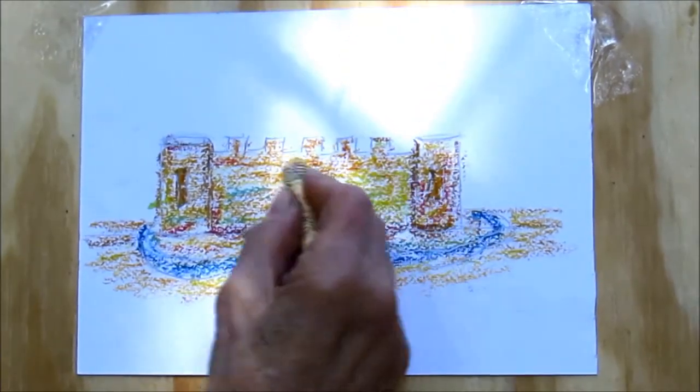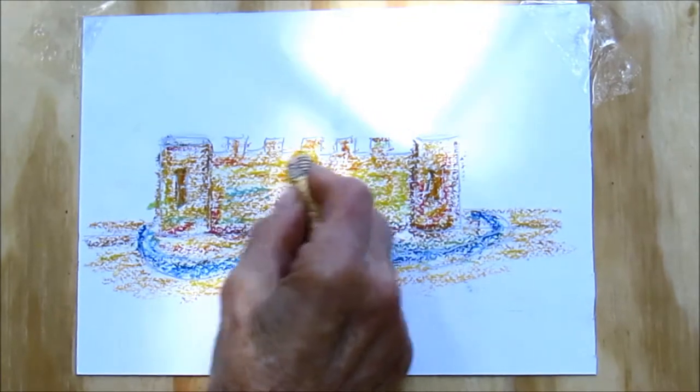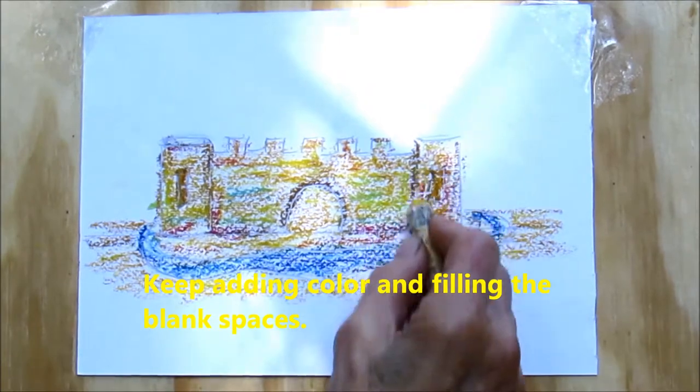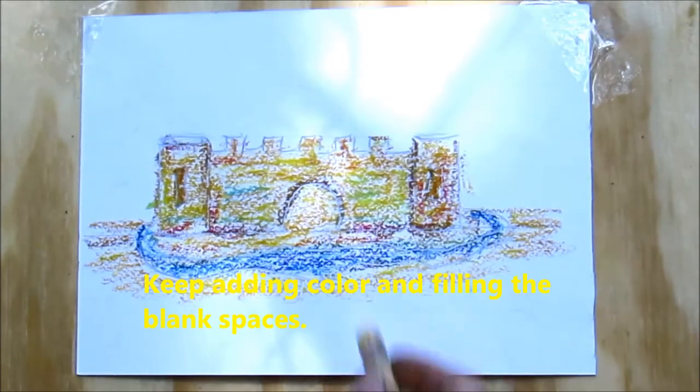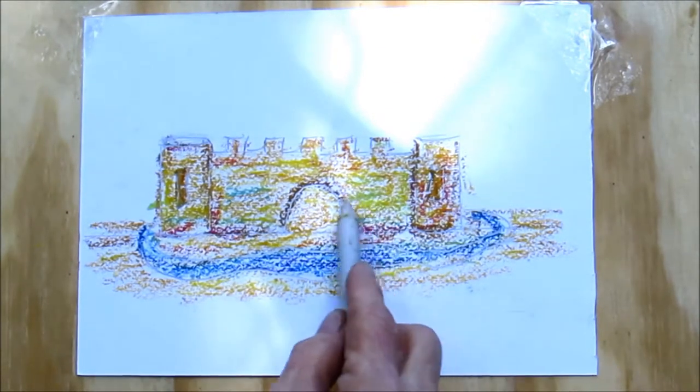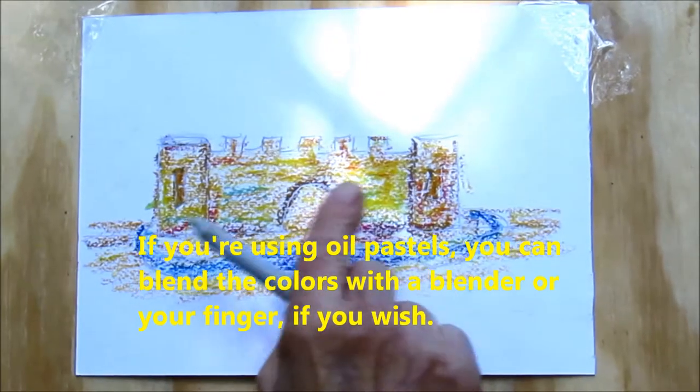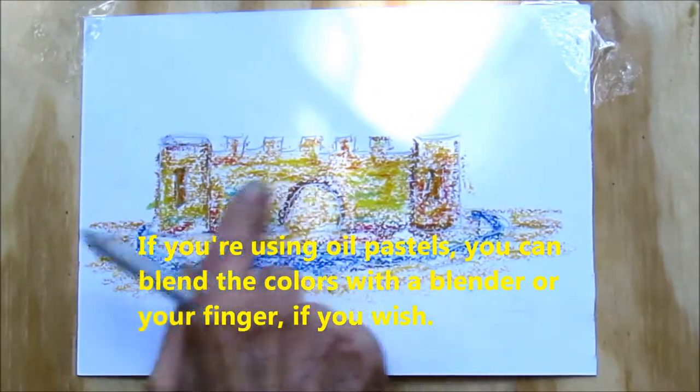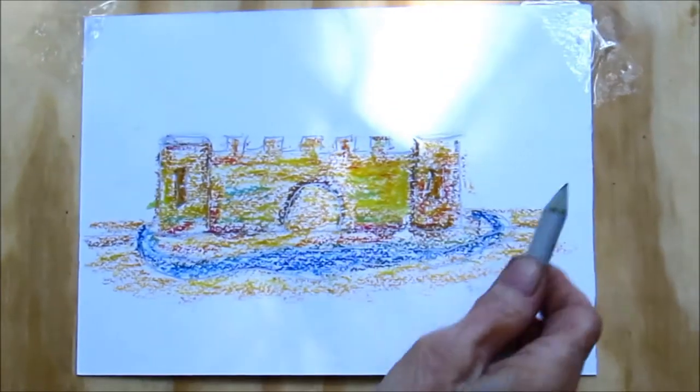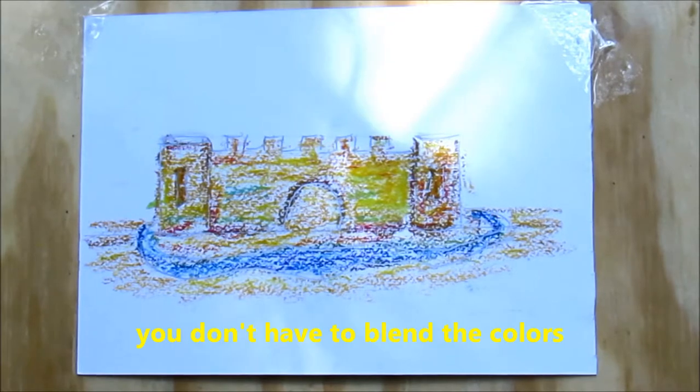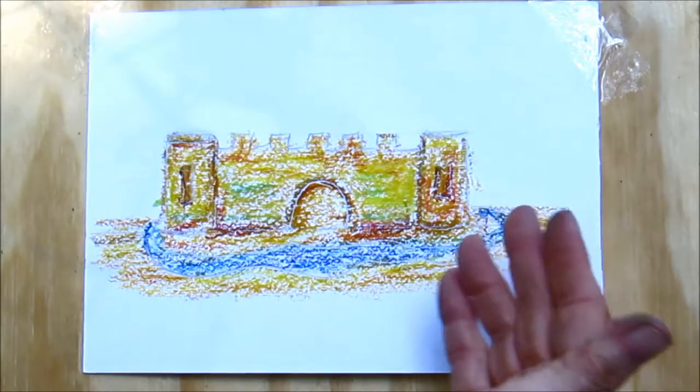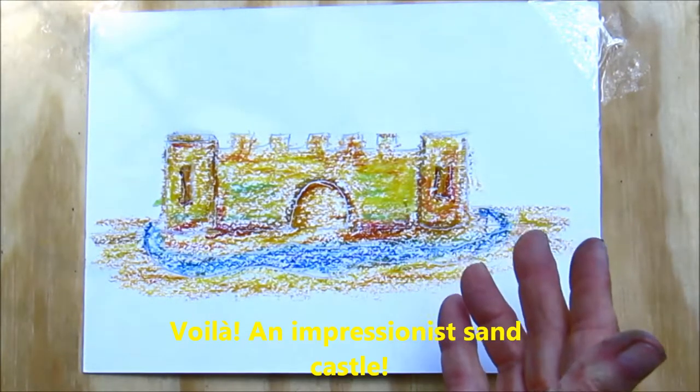So we can keep going over and over with these colors. There are a lot of colors here, until we filled in all the blanks, and you may want to blend with a blender. Maybe you want to blend, or you could do this with your finger, the tip of your finger to blend the colors, so that it looks very smooth. You don't have to do that. Personally, I prefer not to. And voila! Un Château de Sable Impressionniste. An Impressionist sandcastle.